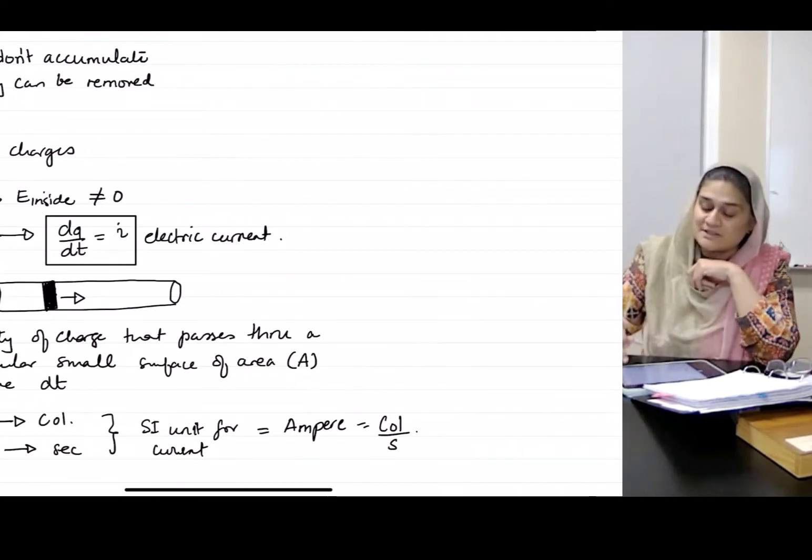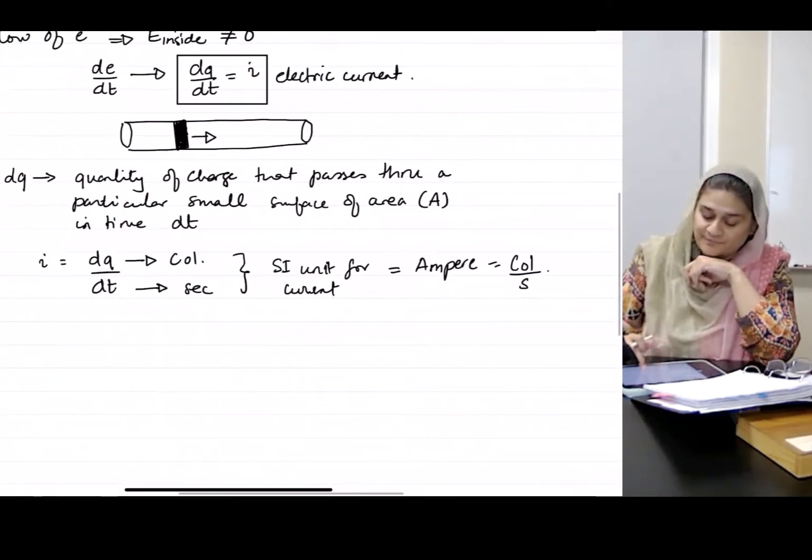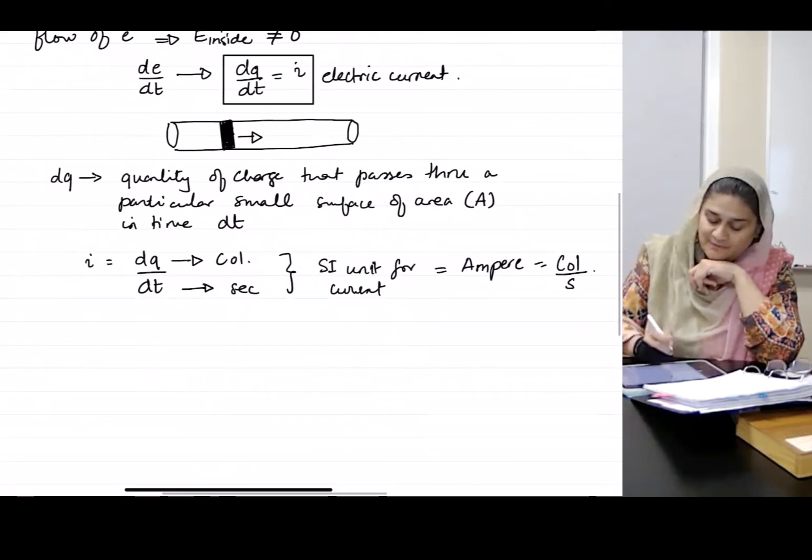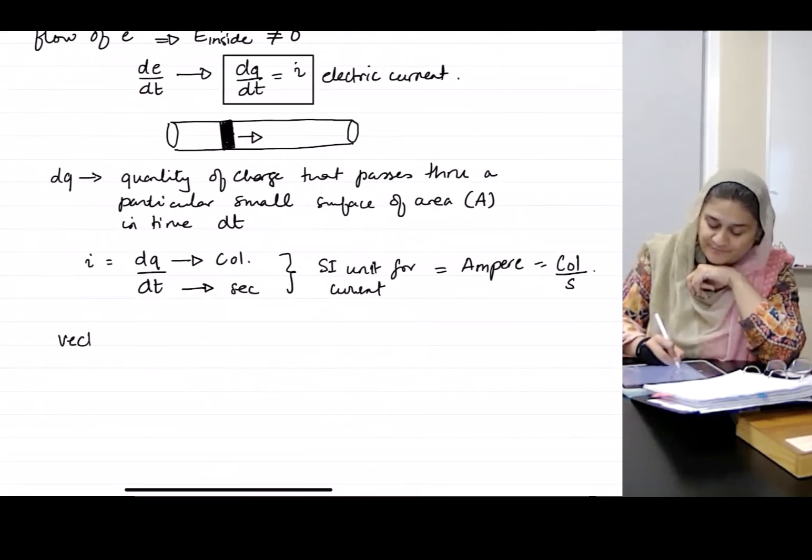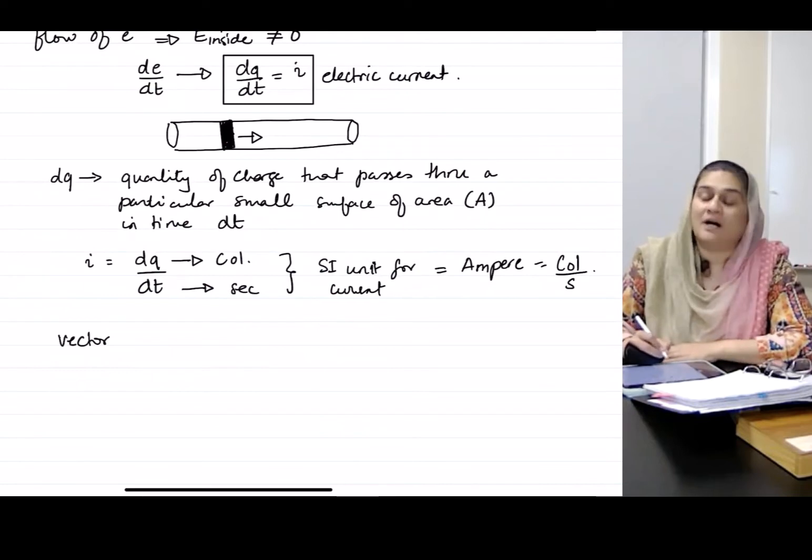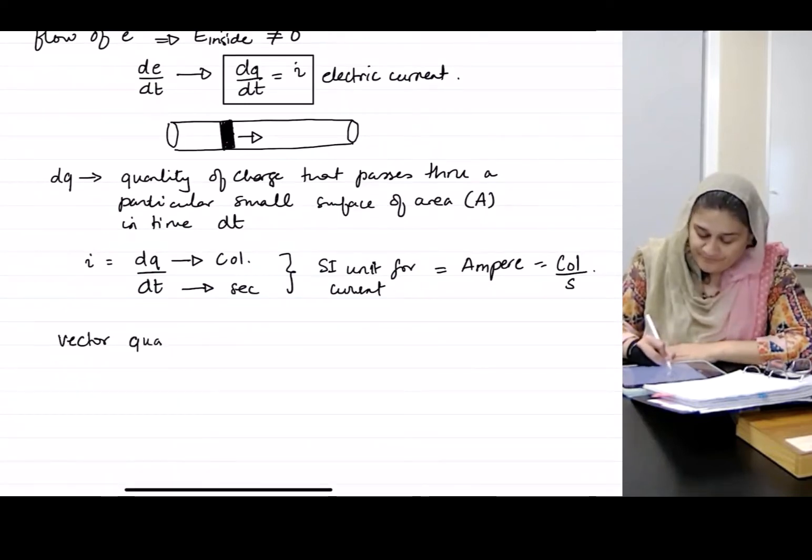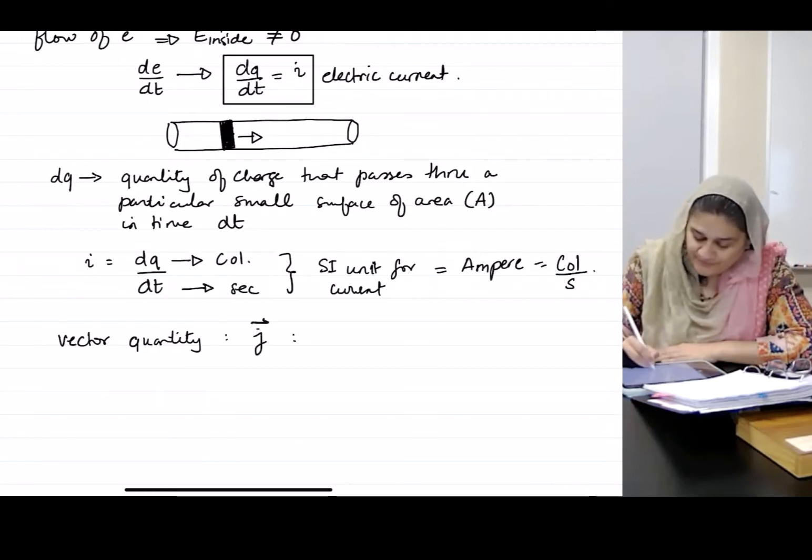Usually currents are scalars. However, the vector quantity that Griffiths talks about a lot is called J, which is the current density.